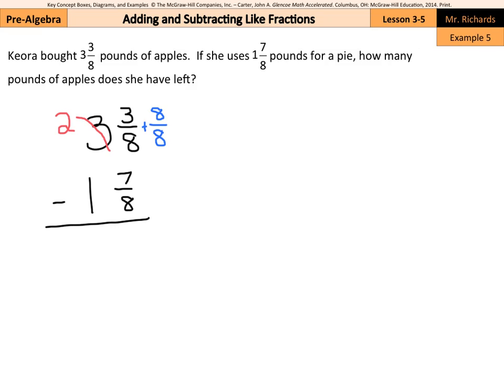Why does this help me? Well, this becomes 2 and 11 eighths minus 1 and 7 eighths. So now I can take 11 minus 7 to get 4 eighths, and 2 minus 1 is 1. Divide the top and bottom of this fraction by 4, and we end up with 1 and 1 half pounds remaining.